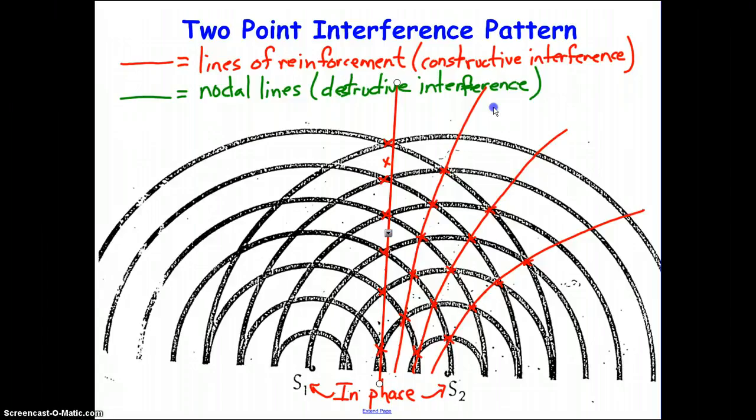Where would that be? On our diagram, that's where a crest from one source is going to line up with a trough of the other source. If we look just to the right of the center line of reinforcement, I'm going to mark with my green where this crest is meeting the center of that trough all the way up through in between these pair of lines of reinforcement.